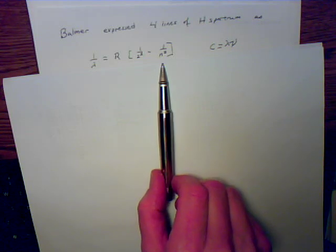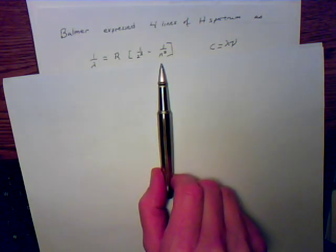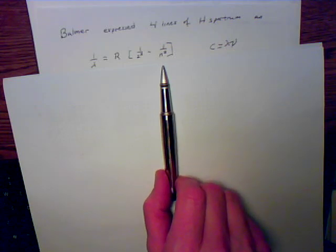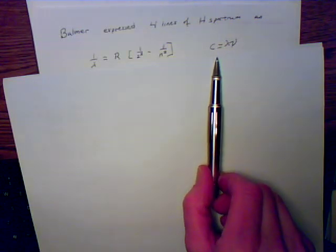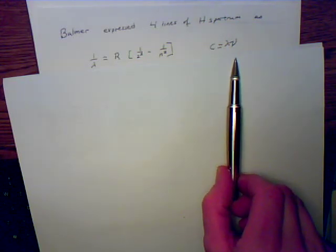1 over n squared where n is always going to be greater than 2, and the equation to the right of this equation in your book was determined using this expression here which should be memorized.